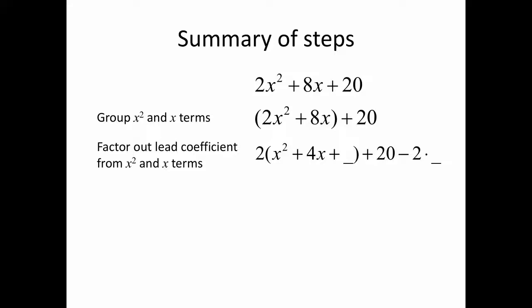On the right it's 20 minus 2 — that lead coefficient — times whatever we put in that blank space. Remember, when we split the 2x squared plus 8x into two parts, we needed to fill in two squares. So this time we're filling in two copies of x squared plus 4x.